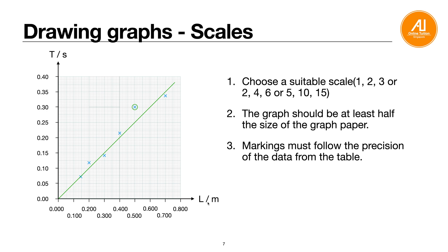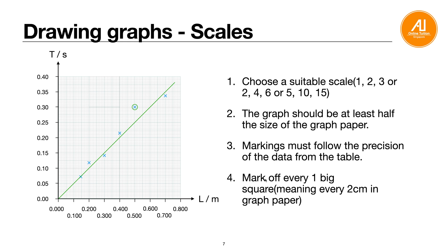Axis markings should follow the decimal places of the data in your table. For length in meters, labels on the axis should be in 3 DP. For time, usually 2 DP — or 1 DP if that's what the table shows. Mark off every one large square (every 2 cm) — you don't need to mark every centimetre as that becomes too cluttered. Even for zero, follow the DP rule, so write 0.000 rather than just 0 if you're using 3 DP.